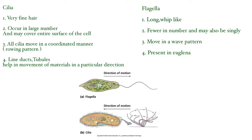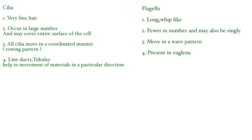Cilia often line ducts and tubules and help in movement of materials in a particular direction, and also serve as a locomotory organ in Paramecium. Flagella serve as a locomotory organ and are present in organisms like Euglena and in spermatozoa.